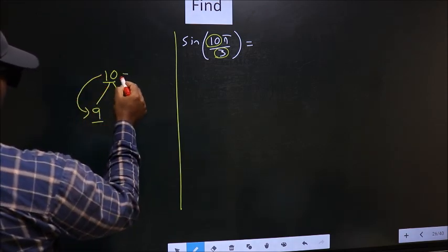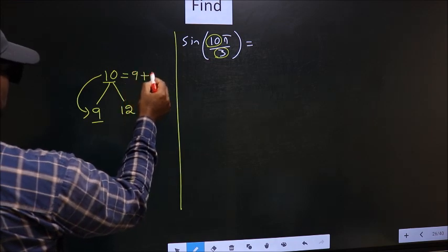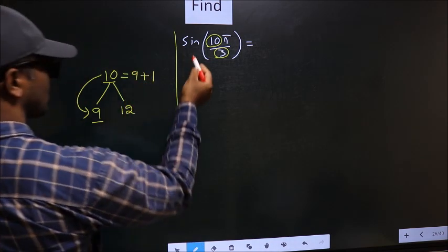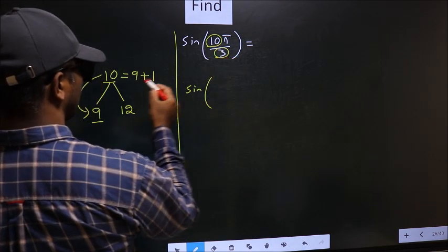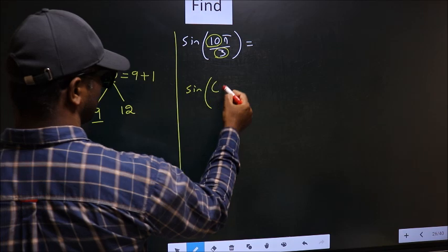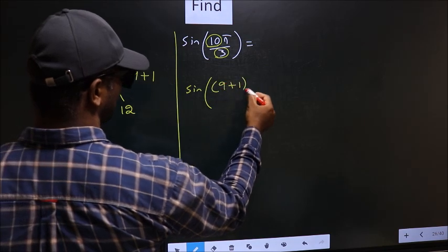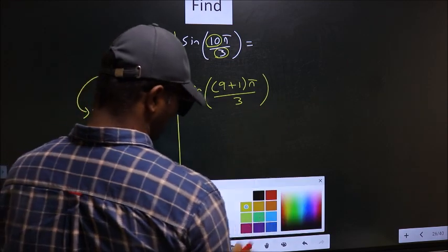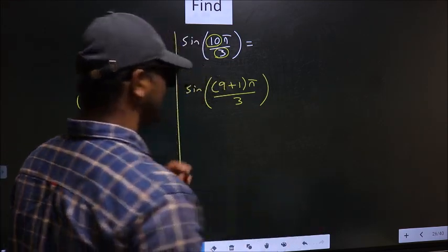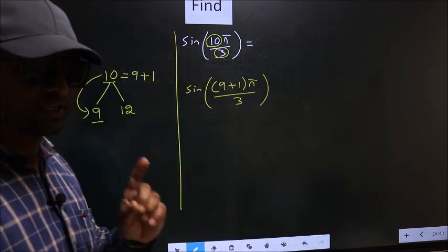So now 10 should be written as 9 plus 1. So this will change to sin of, in place of 10, now we write this: 9 plus 1, π by 3. This is your step 1.